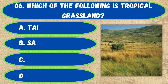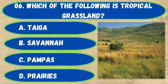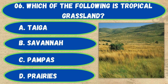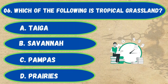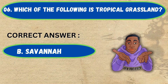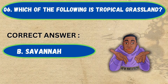Question number 6. Which of the following is tropical grassland? Option A, taiga; B, savanna; C, pampas; D, priories. The correct answer is option B, savanna.